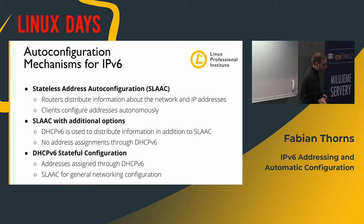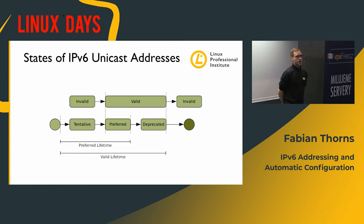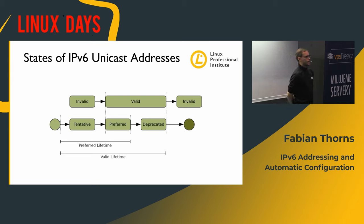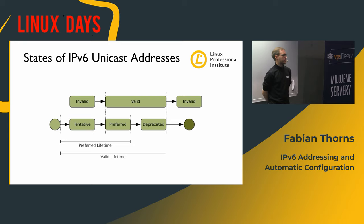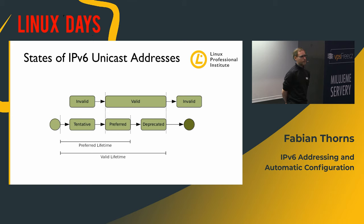To understand how stateless address autoconfiguration works, we need to know about the states of IPv6 addresses. As soon as a new address is configured, it's in a state called tentative. In that state it may not be used yet, and the node does something called duplicate address detection - it sends some packets on the network to see if someone else is using this address. This can be exploited: if you just respond to all of those packets, no IPv6 addresses will come up on your network anymore. That's pretty easy and pretty funny.